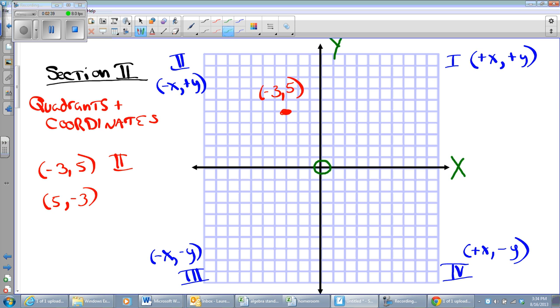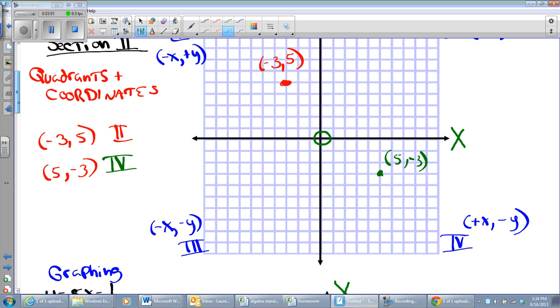Now the other one, 5, negative 3, I'm going to go positive 5 in the x-direction. 1, 2, 3, 4, 5. And then down 3 in the y-direction, 1, 2, 3. And there we are. That's the point, 5, negative 3. And that is in Quadrant 4. If you're not sure about how to do this or you make mistakes with it, you've got to come in and see me. I expect you to know it already.